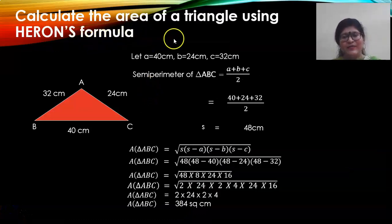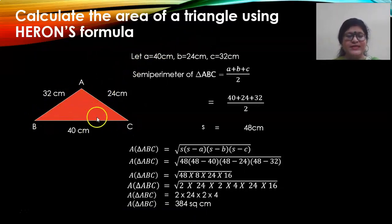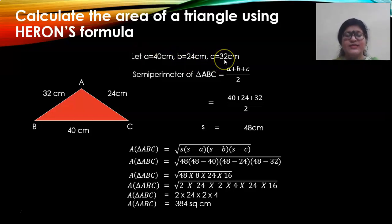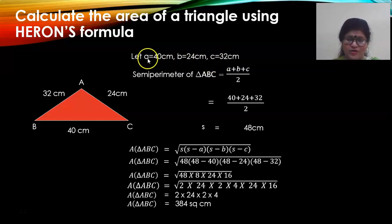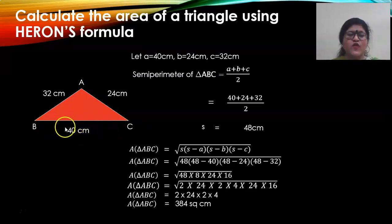Let us now calculate the area of a triangle using Heron's formula. I have drawn triangle ABC wherein the three sides of the triangle are given. You start off the solution by mentioning: let small a equal to 40 cm, small b equal to 24 cm, and small c equal to 32 cm. What is 'a' here? Look at angle A — the side opposite to A is small a, so BC is small a which is 40 cm.